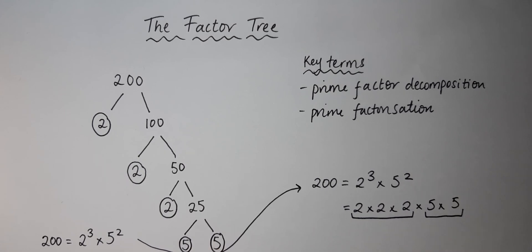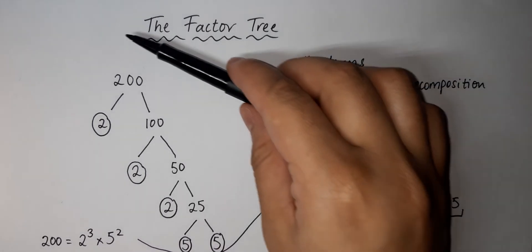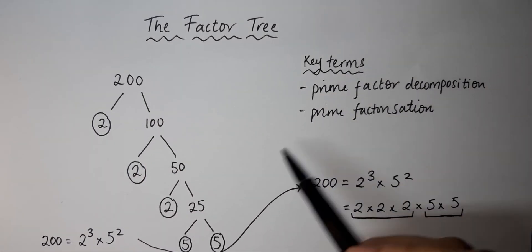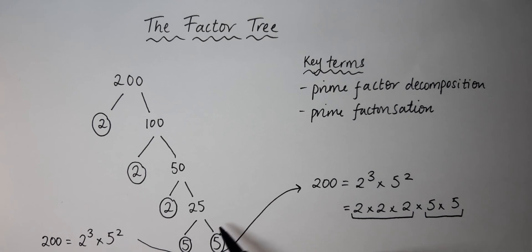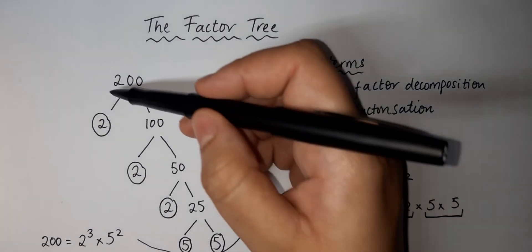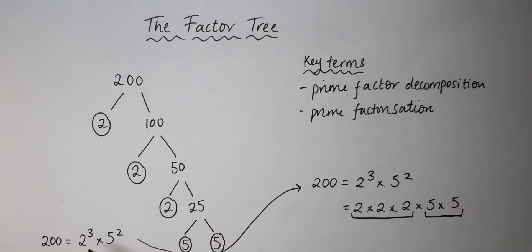In summary, we have looked at an example of a factor tree. There are two terms we can use to describe this: prime factor decomposition or prime factorization. We can rewrite this whole factor tree down into one sentence, and if this is confusing, we can also write it in expanded form. If you like this video, hit the subscribe button. Thank you very much for watching.